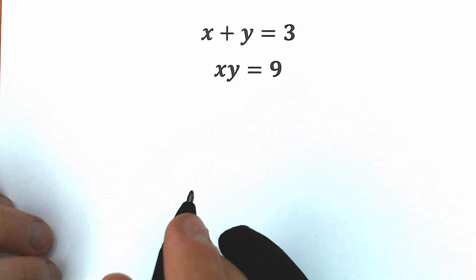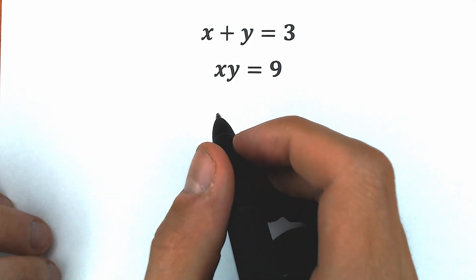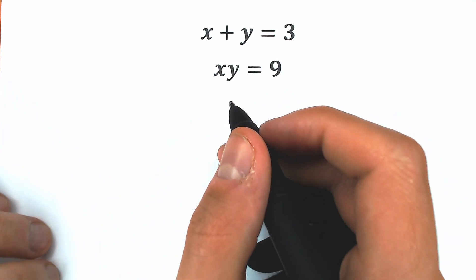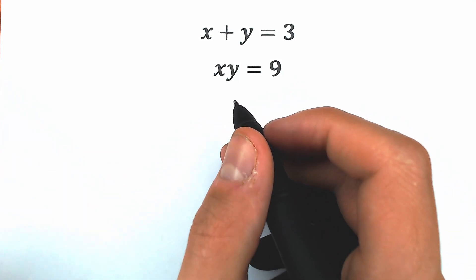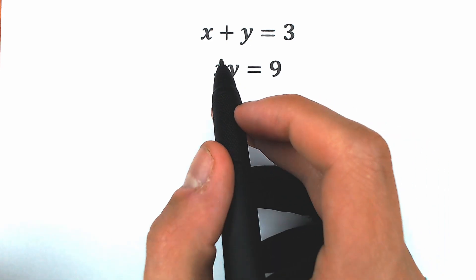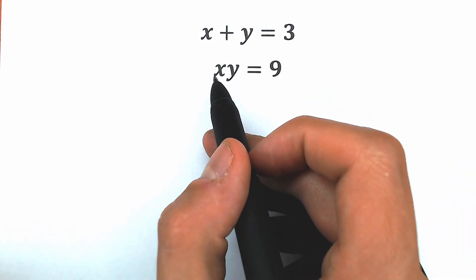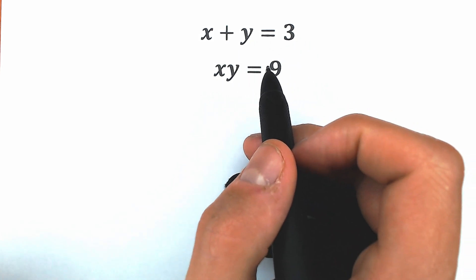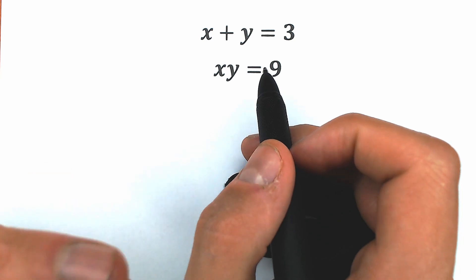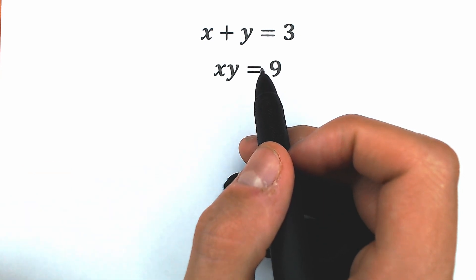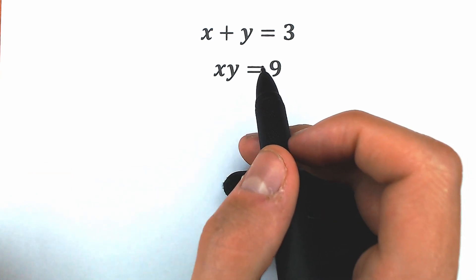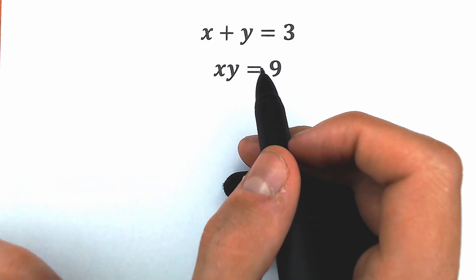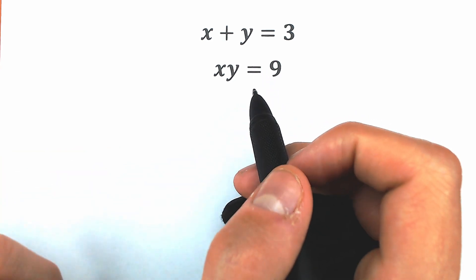Hello everyone, happy to see you here. Welcome back to my channel. I'm a semantics. Today we have a really interesting, quick and relaxing question: x plus y equals 3, and the product x times y equals 9, and we need to find x and y. If you have your own solution or assumption, write it down in the comment section. We will check our answers — it will be really interesting to exchange information.